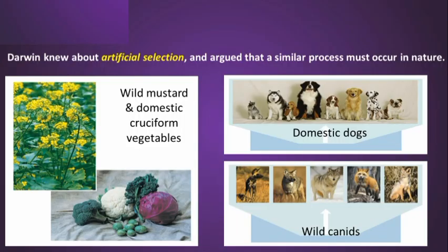He also knew about artificial selection, which was practiced in the late 19th century — the idea of taking plants or animals and breeding through artificial selection to get different plants, high-yielding plants, or different dogs. All dogs, for instance, are derived from wild canids, and if you look at the canids and the domestic dogs, there's a huge variation that you can achieve through artificial selection.